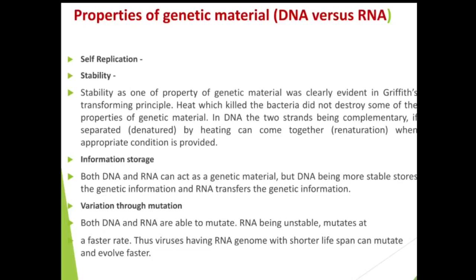Mutation is the last property of genetic material. Both DNA and RNA are able to mutate. But RNA, being unstable, can mutate at a faster rate. So RNA viruses have a shorter lifespan and can mutate as well as evolve quickly. From the properties of genetic material, we conclude that DNA is more stable when compared to RNA.